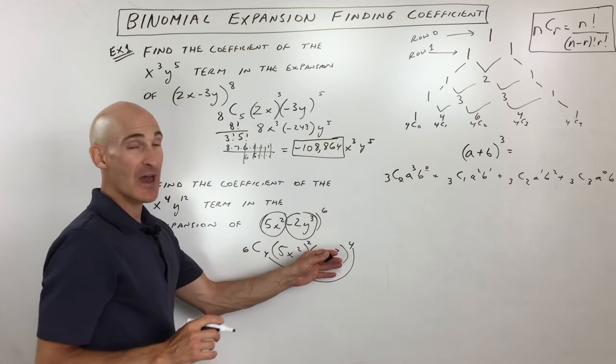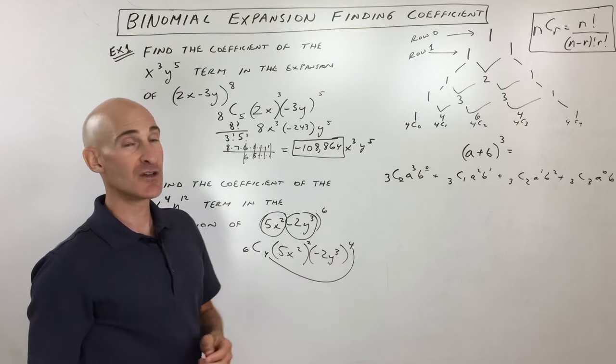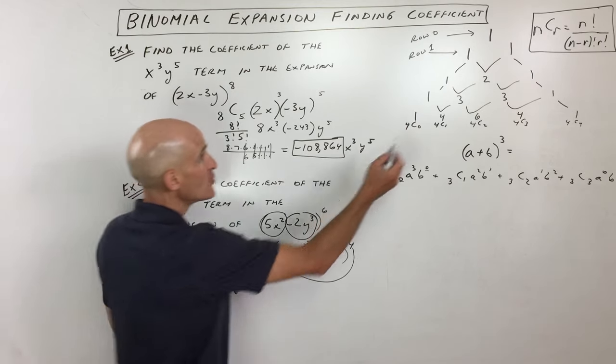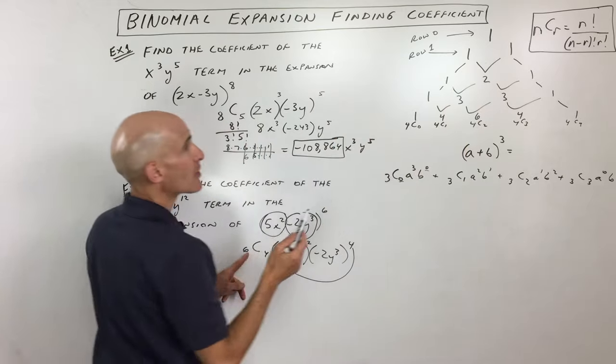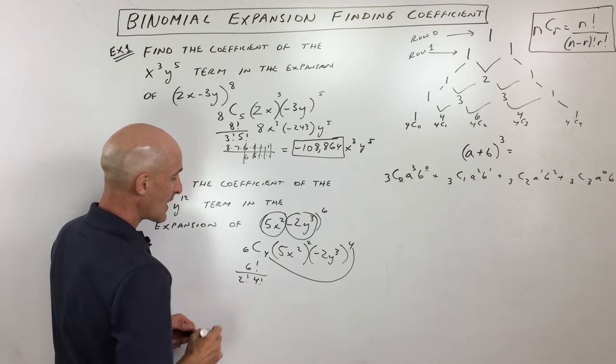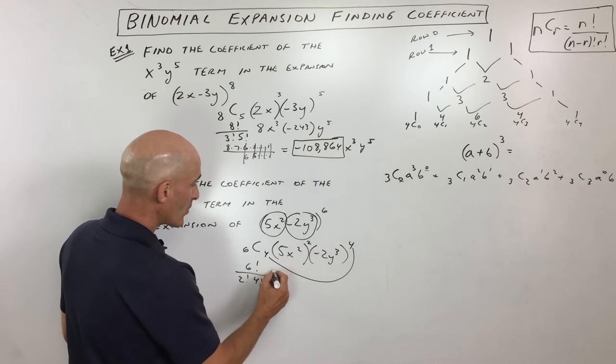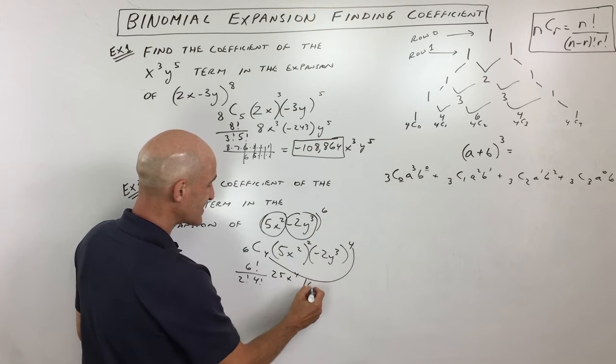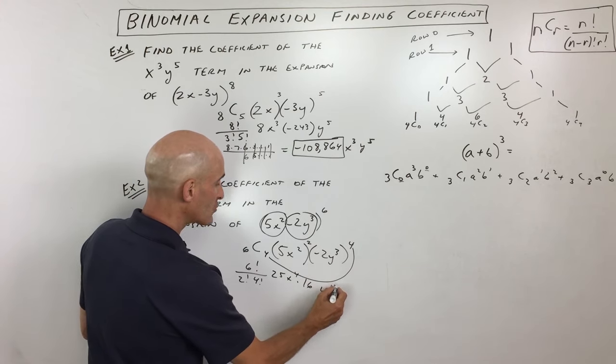Now all we have to do is simplify this out. And that's going to be the particular term that we're looking for. So let's do that. So six choose four. If we use our combination formula right up there, we've got 6 factorial over (6 minus 4), 2 factorial times 4 factorial. 5 squared is 25. X to the fourth. Negative 2 to the fourth is 16. Y to the twelfth.